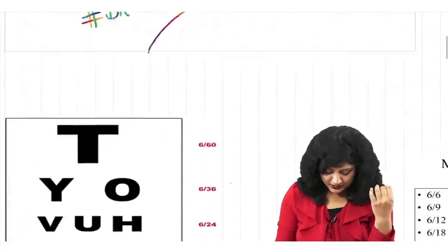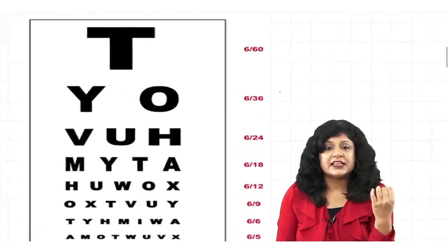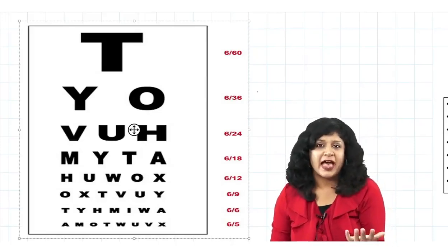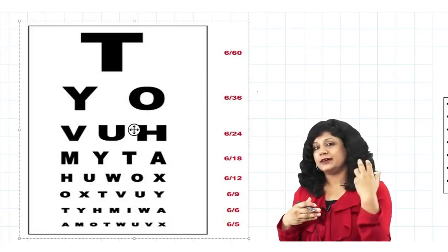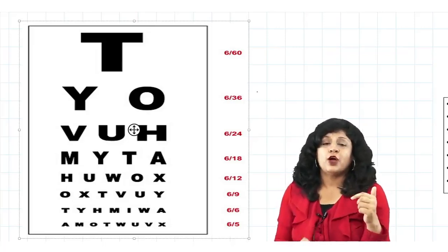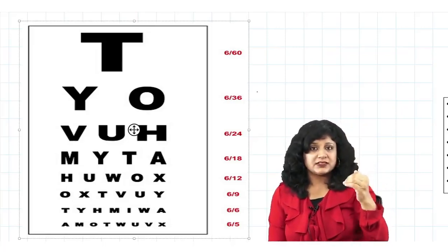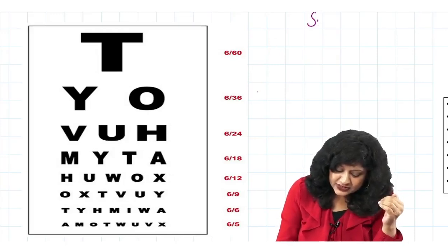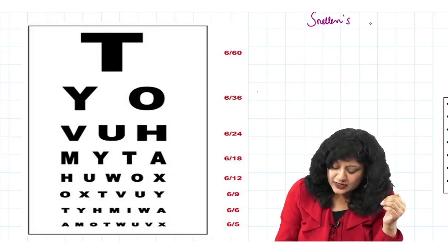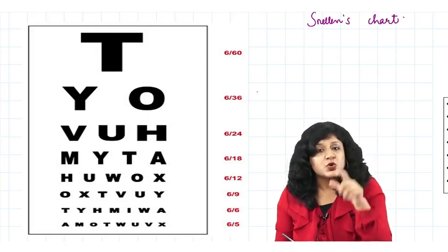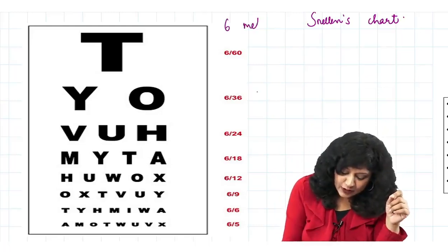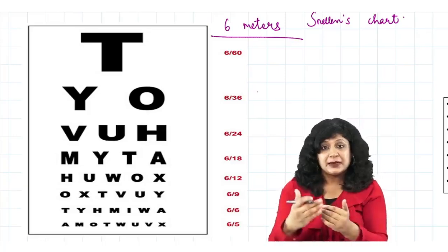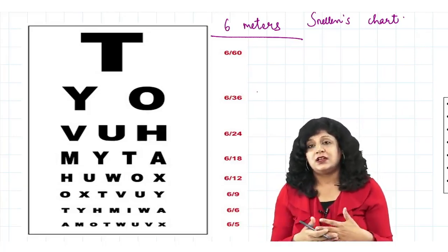Now let us see what the Snellen's chart is. This is your Snellen's chart on the vision box. Most of you have experienced this — you are made to read this vision box from the topmost letter going down to the minimum line. Ideally when talking about this Snellen's chart, the patient should be standing at a distance of 6 meters. This is the ideal standard.